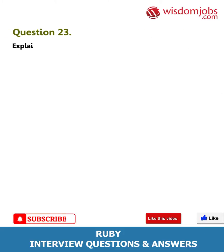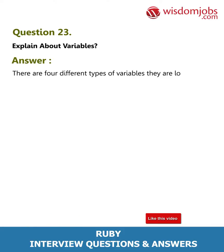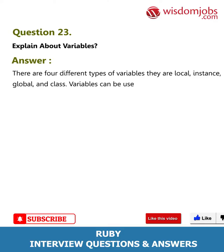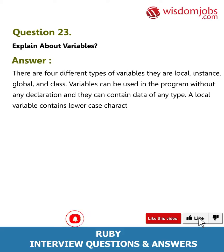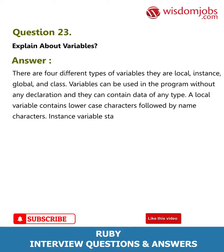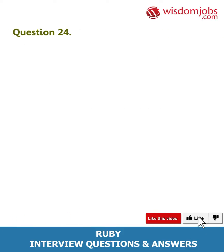Question 23: Explain about variables. Answer: There are four different types of variables: local, instance, global, and class variables. Variables can be used in the program without any declaration and they can contain data of any type. A local variable contains lowercase characters followed by name characters. An instance variable starts with an at sign (@) followed by name characters.